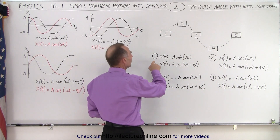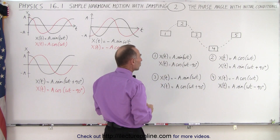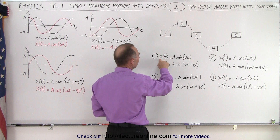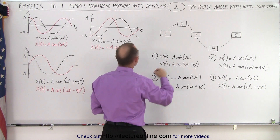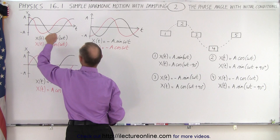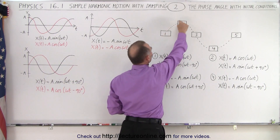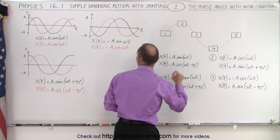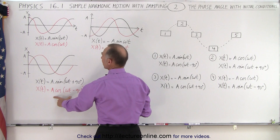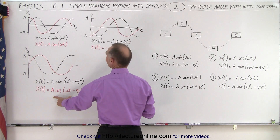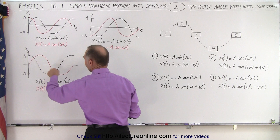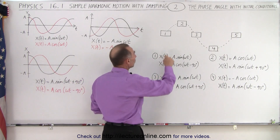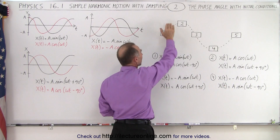For position one — starting at equilibrium on the way up — we can write x equals a sine of omega t, which is the black curve starting at this position and going up. Or we can use a cosine of omega t minus 90 degrees, which is the red curve, and it gives you the exact same function. Either one describes simple harmonic motion with the object starting at the equilibrium point on the way up.